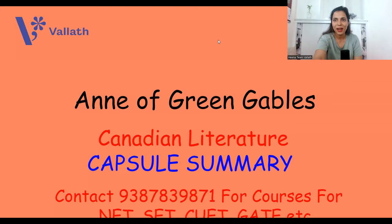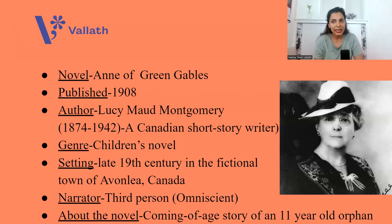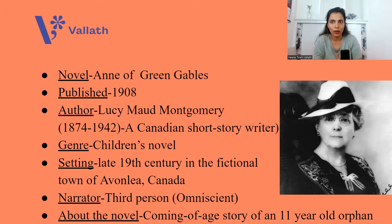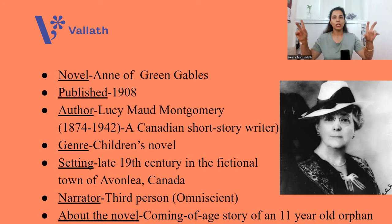Published in the year 1908, Anne of Green Gables is a novel by Lucy Maud Montgomery — a very famous Canadian short story writer, poet, and novelist who lived from 1874 to 1942. The genre is children's novel and also coming-of-age novel. The setting is late 19th century in the fictional town of Avonlea, Canada, and the narrator is third-person omniscient, who knows everything about all the characters.